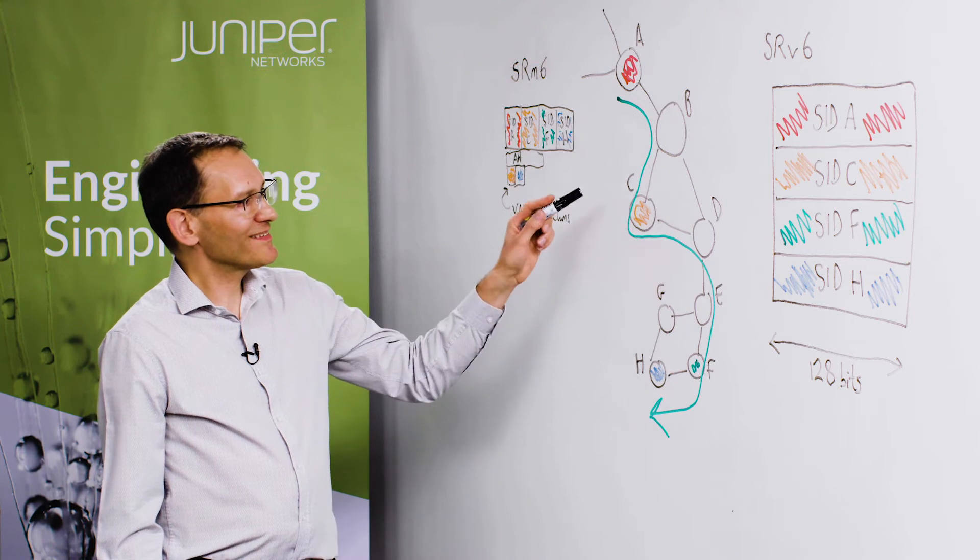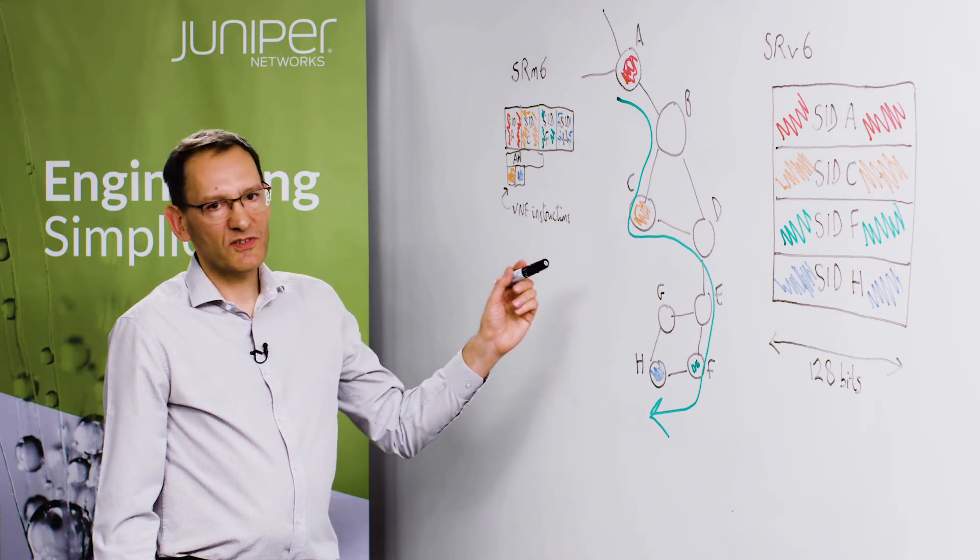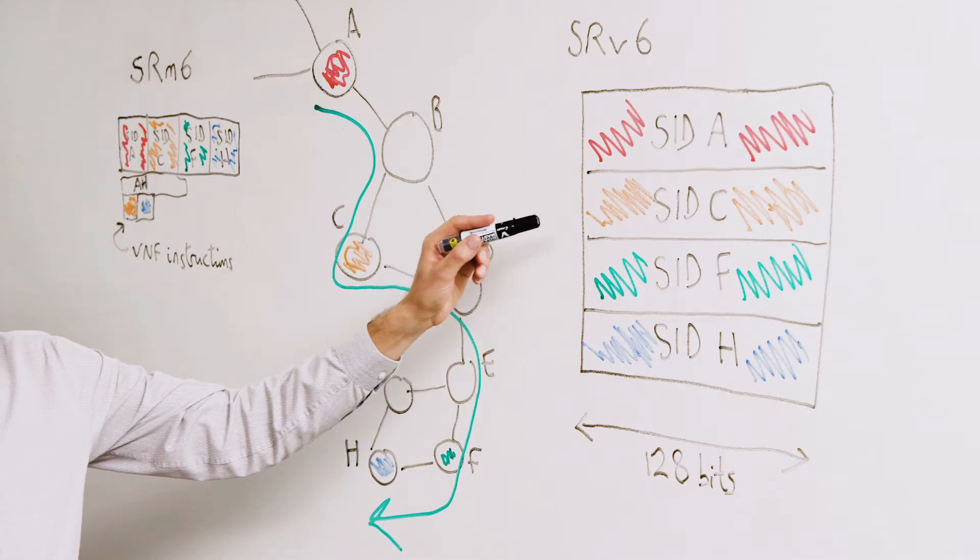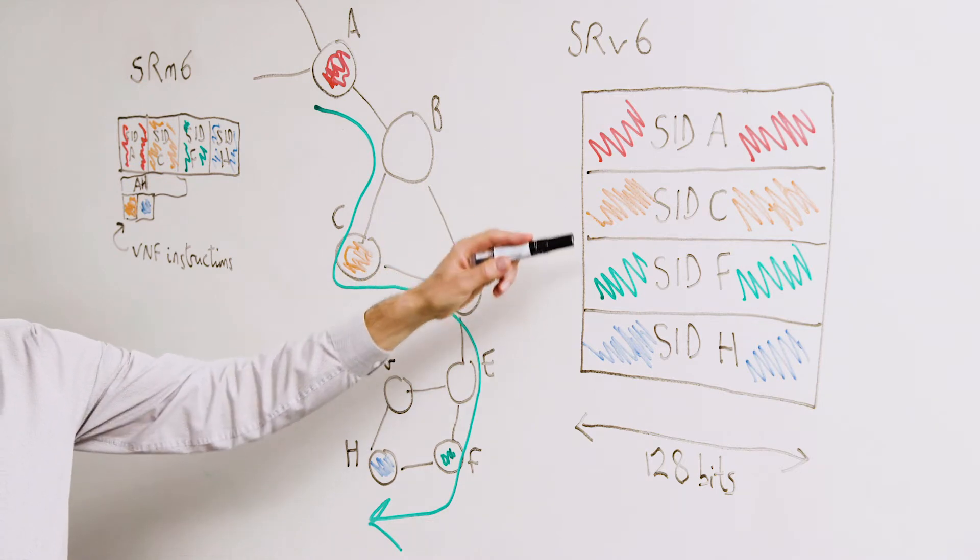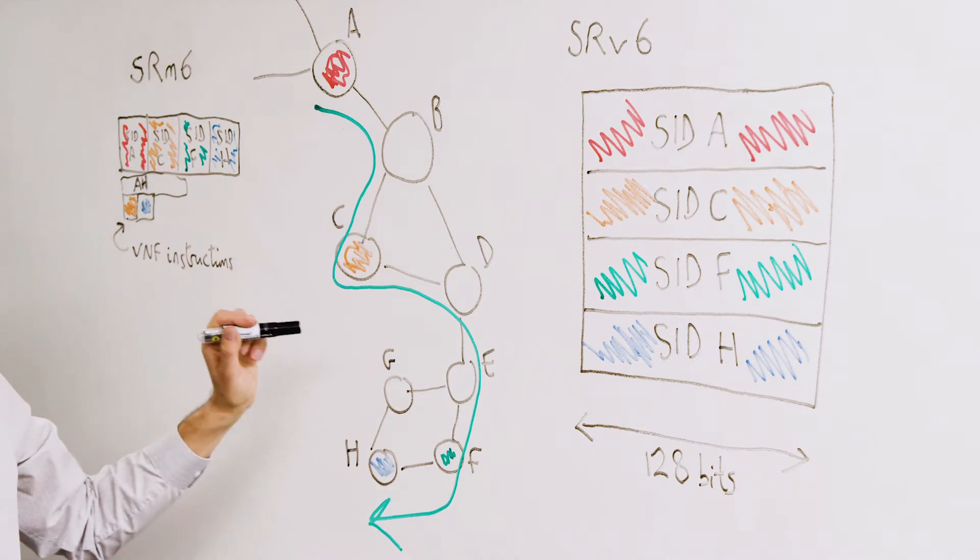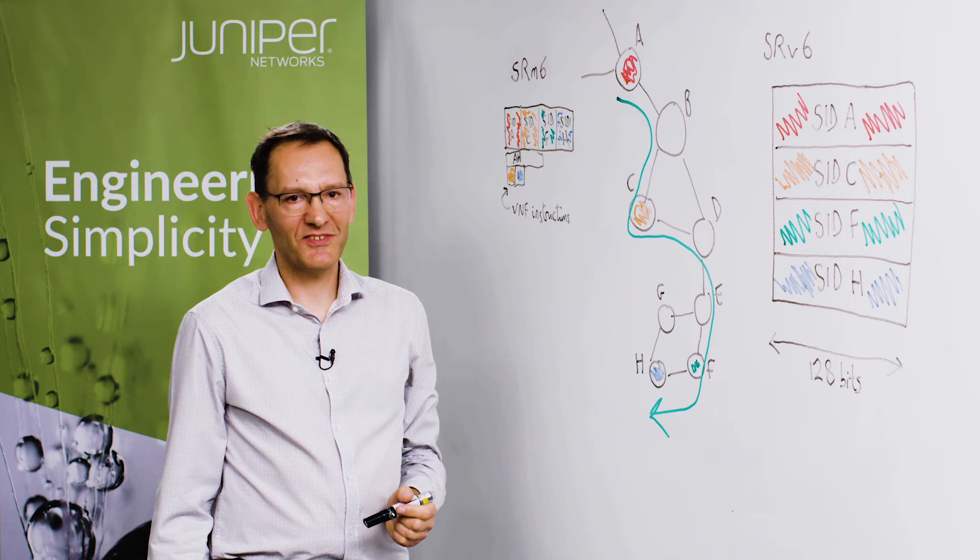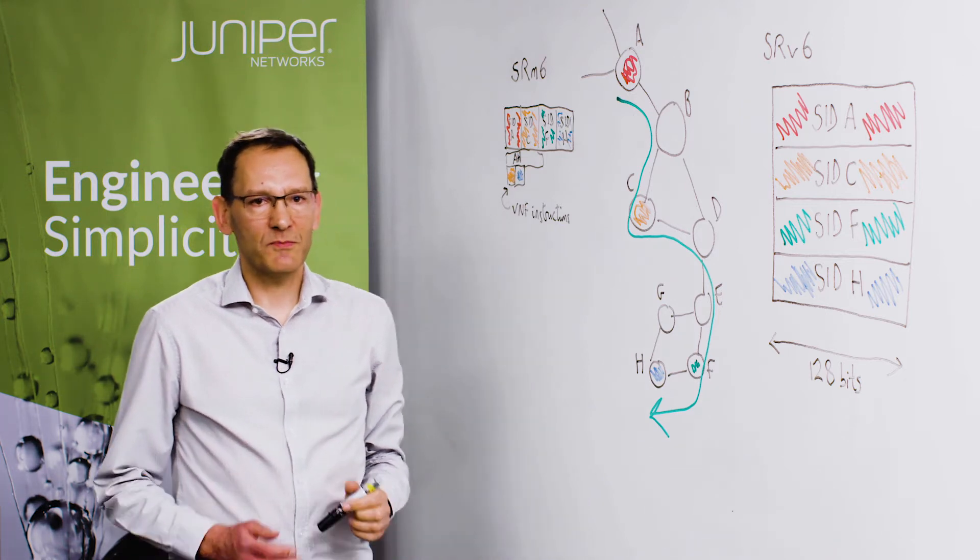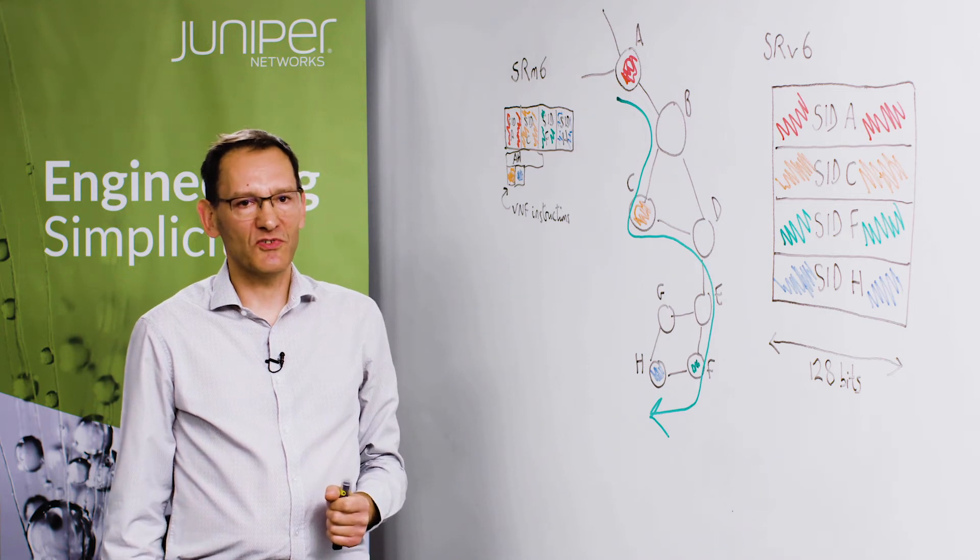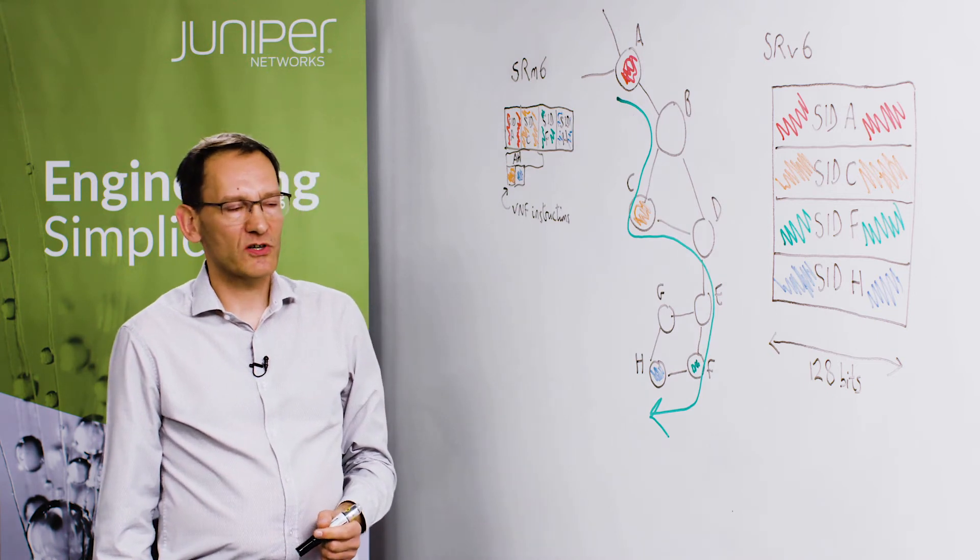If we look at SID C in a bit more detail, SID C as I mentioned is doing some VNF processing and so that SID is actually in two parts. The first X bits are actually the locator of node C itself. That's how the traffic reaches node C in the first place. And then the final bits are instructions for the VNF function associated with node C. This might be a video codec or might be parental controls, and so there'll be parts of the SIDs carrying instructions for that particular function.